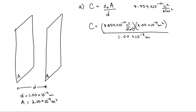Let's do an inline unit check to make sure everything works out — we're looking for units of capacitance. A meter squared in the numerator cancels with a meter squared in the denominator. Plugging these values into my calculator, I get 1.77 times 10 to the minus 12, with units of coulombs squared over newton meter. This is one form of the units for capacitance. We usually deal with farads, but a coulomb squared per newton meter is also a valid unit.